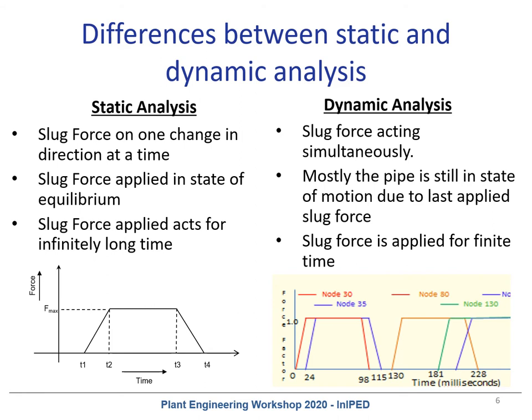The designer should choose dynamic analysis over static analysis for more accurate simulation of the piping system under dynamic force. When dynamic analysis is performed, we simulate slug force acting at more than one change in direction at a given time, depending on slug length. That means when slug reaches the next change in direction, the pipe is still in motion due to the slug force applied at the last change of direction. Therefore slug forces are active for finite time only. This time history analysis nullifies the overlapped force as shown in the image and produces results only for unbalanced forces with an accurate DLF, which will mostly be less than 2.